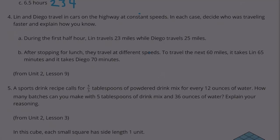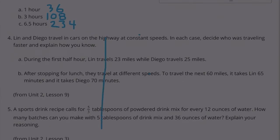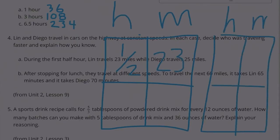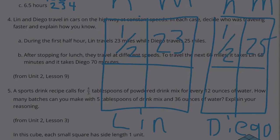Number 4: Lynn and Diego traveled in cars on the highway at constant speeds. In each case, decide who was traveling faster and explain how you know. During the first half hour, Lynn travels 23 miles while Diego travels 25 miles. Hour, miles. During the first half hour, Lynn traveled 23 miles, Lynn on the left, Diego on the right. In the first half hour, Diego traveled 25 miles. Since 25 miles is greater than 23 miles, Diego traveled faster because he traveled a further distance in the same amount of time.